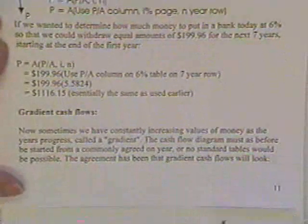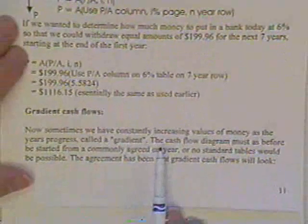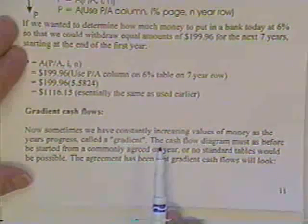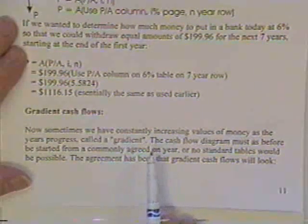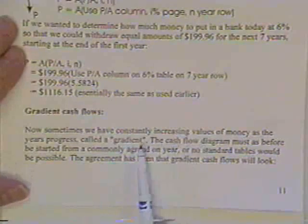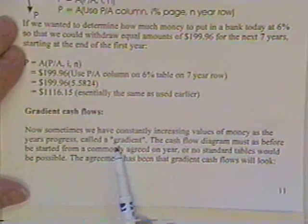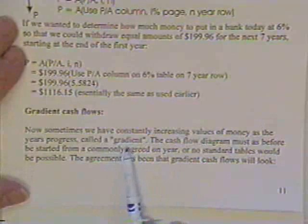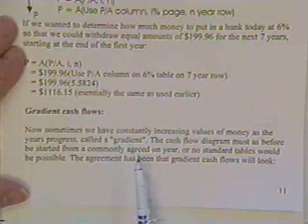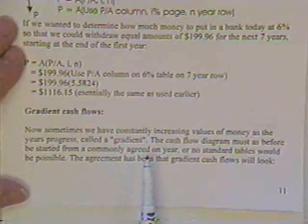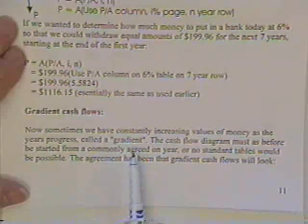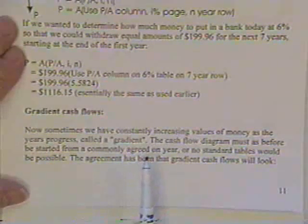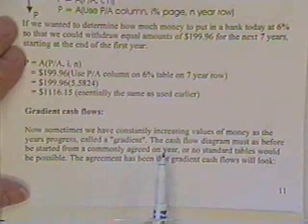Now, a lot of times you have cash flows that are not constant per year, or constant per month, or constant per payment period. In that case, if they are linearly increasing, they're called a gradient. And again, you and I will have to agree on some common year as to when to start putting the gradient in.